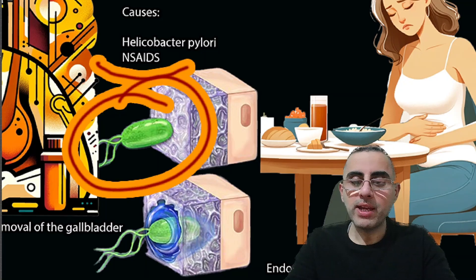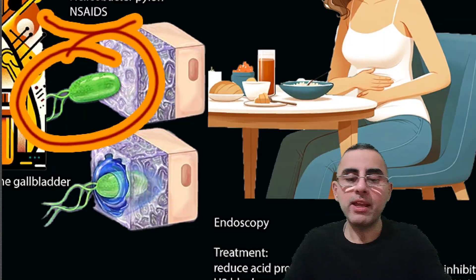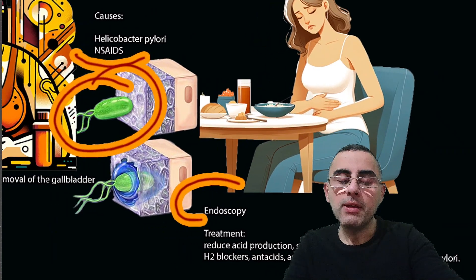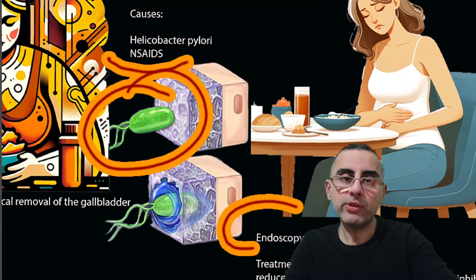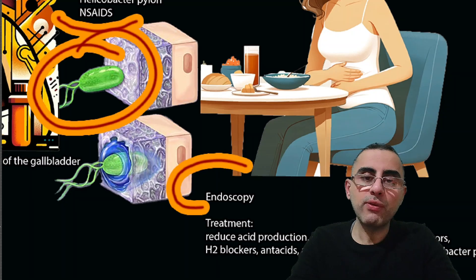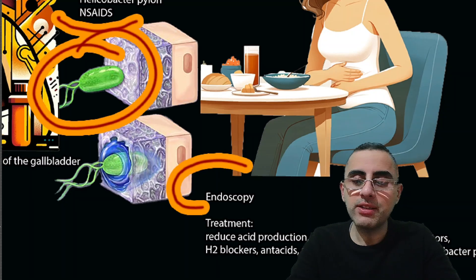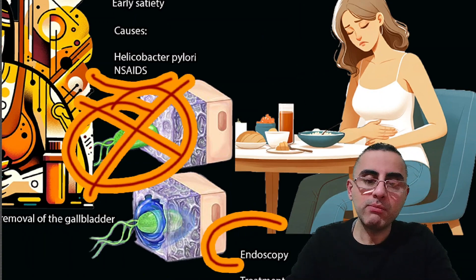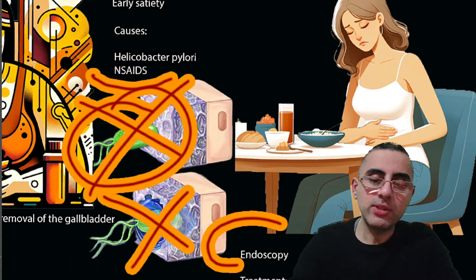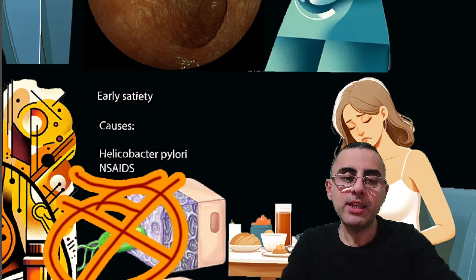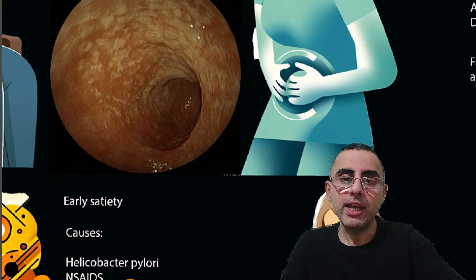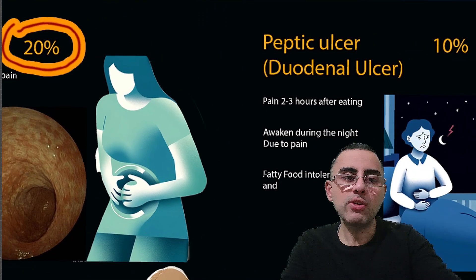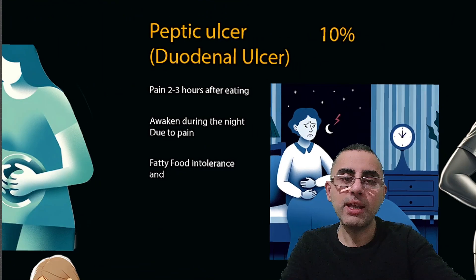Sometimes non-steroidal anti-inflammatory drugs such as aspirin also cause gastritis. Gastritis is diagnosed by endoscopy, and treatment involves reducing acid production using proton pump inhibitors, H2 blockers, antacids, and antibiotics to eradicate the Helicobacter pylori infection.